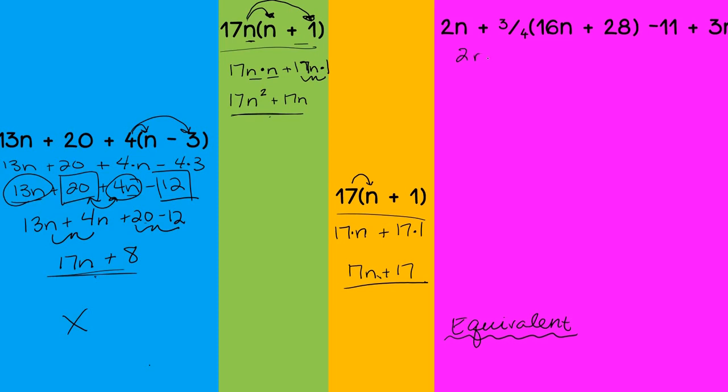Last but not least, let's go ahead and try out the pinky purple. So I have 2n plus 3 fourths times 16n plus 3 fourths times 28 minus 11 plus 3n. Alright. So 2n plus, well, when we do 3 fourths of 16, I can think of this a couple of ways. 3 fourths of 16 is going to be 12.